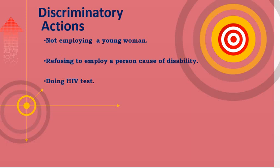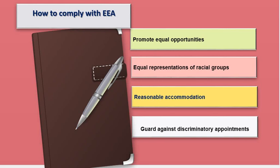Let's look at how to comply with the Employment Equity Act. Firstly, businesses must guard against any kind of discriminatory appointments. They must promote equal opportunities and fair treatment. They must have reasonable accommodation of people from a number of designated groups. They must ensure equal representation of all racial groups in every level of employment, and must submit the Employment Equity Plan to the Department of Labour every two years. They must also retain designated groups, including skills development of people within such groups.